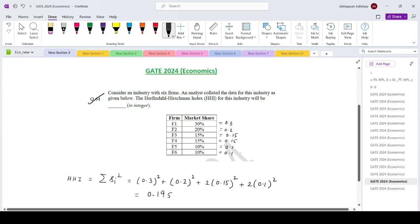Since we are asked to give the answer as an integer, we will convert it into percentage. So multiplying by 100, that is 19.50%.